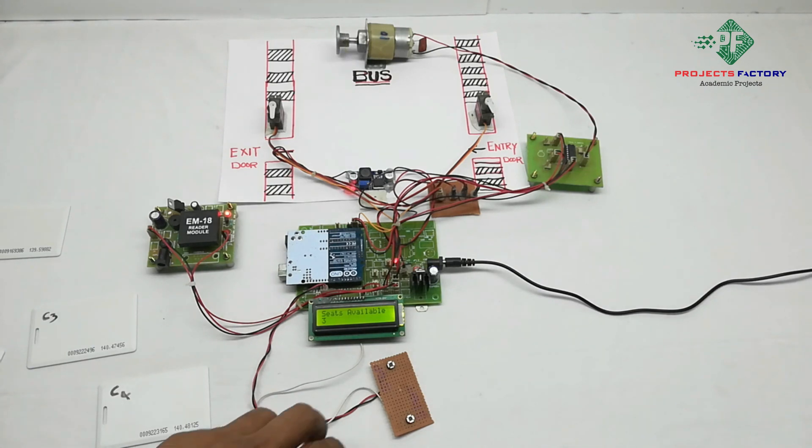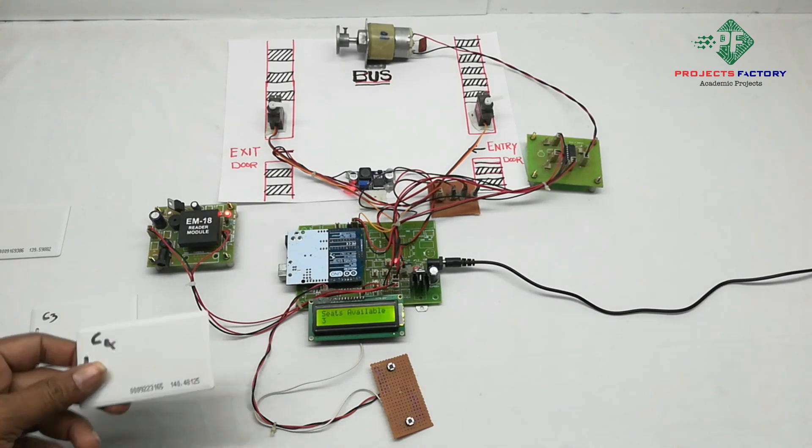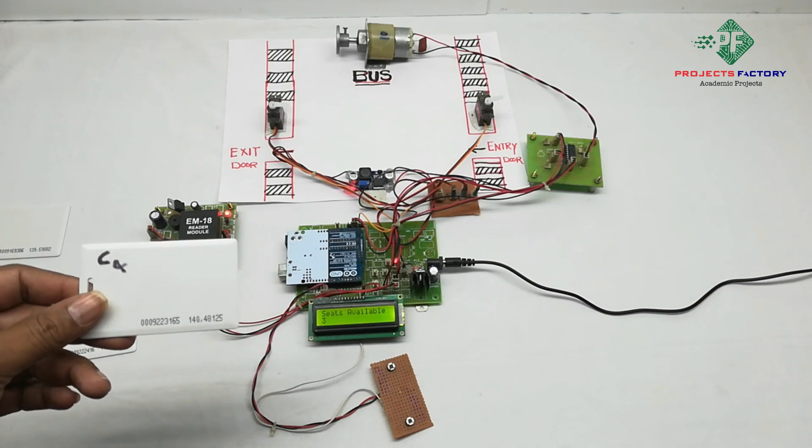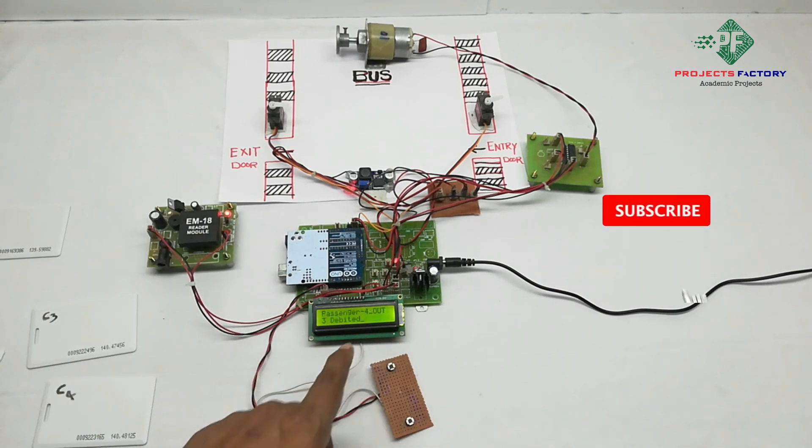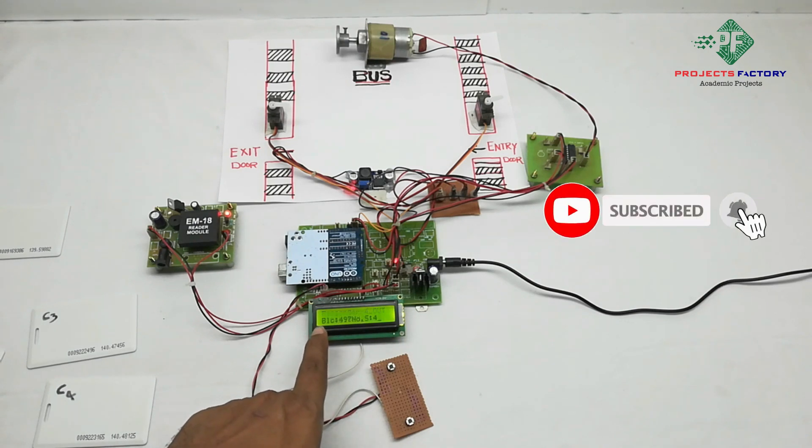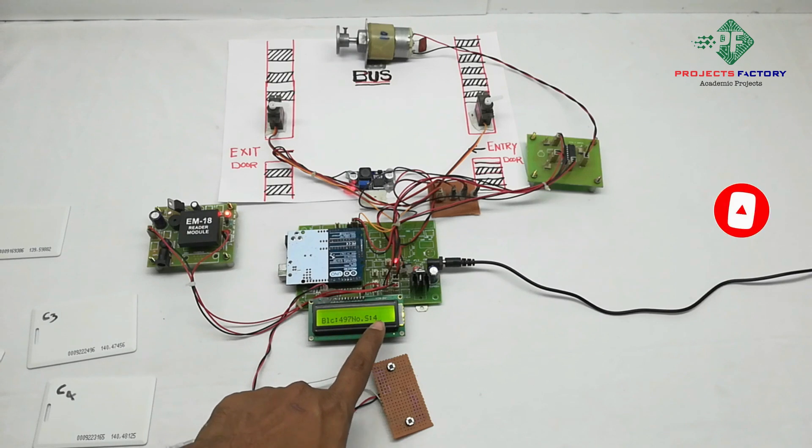Stop the vehicle, doors open. At this stop we drop passenger 4. Passenger 4 out - passenger 4 crossed 3 stops, showing 497 rupees and seats availability 4.